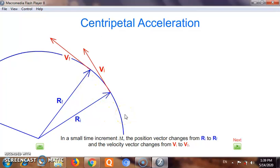There is a very small time delta t which we allow in which all these things are happening. The radius changes from ri to rf and velocity changes from vi to vf.